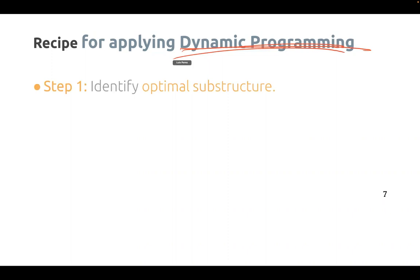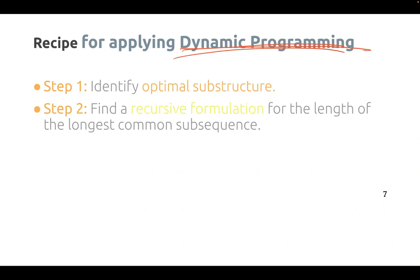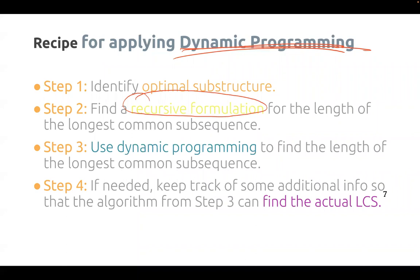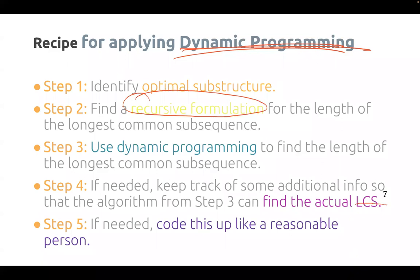Step one: identify the optimal substructure. Step two: find a recursive formulation — figure out how to solve the problem given answers to smaller problems. Then we use dynamic programming to actually solve the problem. We're going to find that solving the longest common subsequence is actually helpful to first find the length of it, then find the actual sequence itself. We'll talk about what additional information we need to add to our algorithm in order to return the actual LCS, and then code it up. Steps four and five we won't focus on much in class, but your homework will give you practice with them.